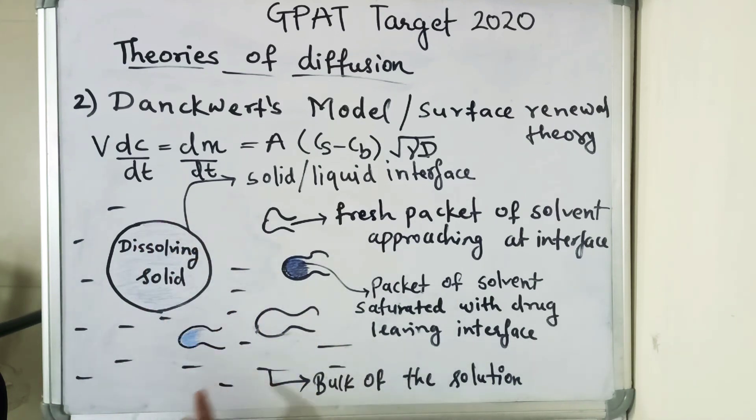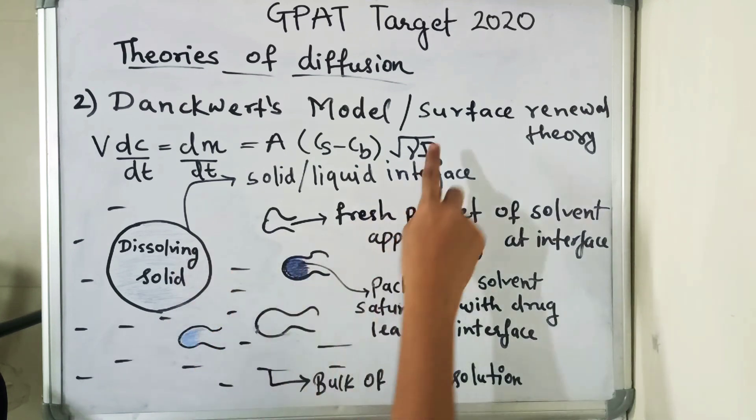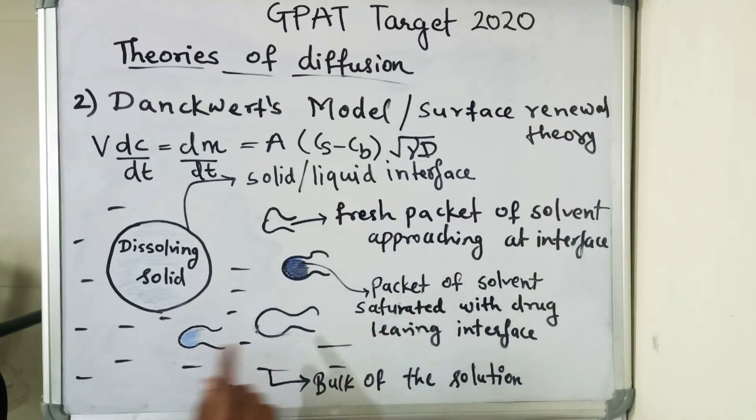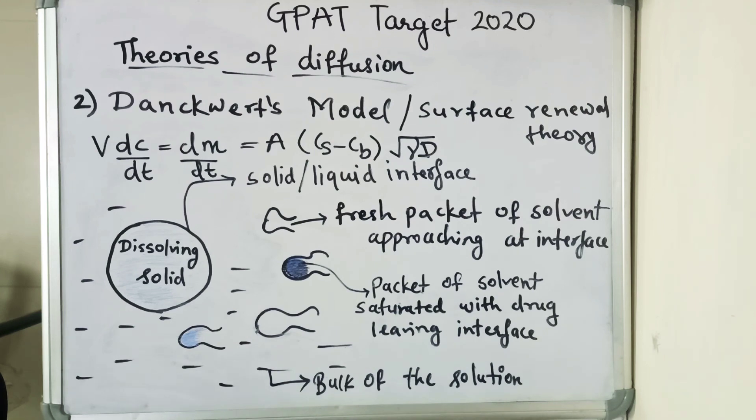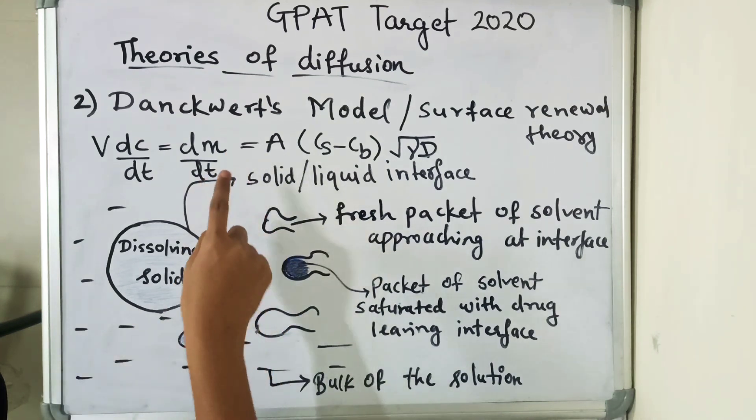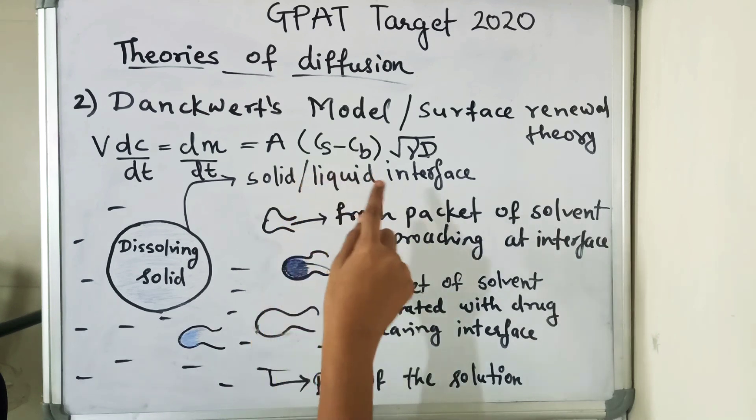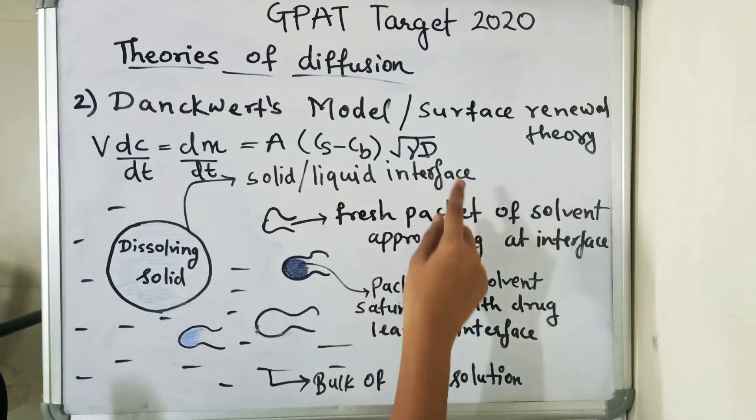Such solute-containing packets are continuously replaced with fresh packets, due to which the drug concentration at the solid-liquid interface never reaches cs and has a lower limiting value of ci. Since the solvent packets are exposed to new solid-liquid surface each time, this theory is called surface renewal theory. The Danckwerdt's model is expressed by equation V dc/dt equals dm/dt equals A times (cs minus cb) times root of gamma D, where m is the mass of solid dissolved and gamma is the rate of surface renewal or interfacial tension.